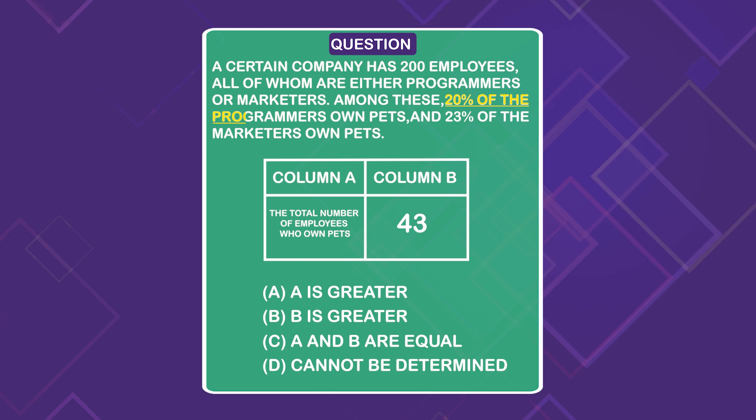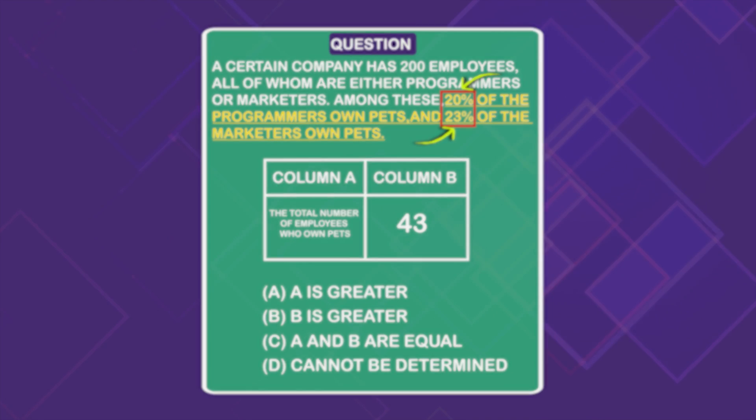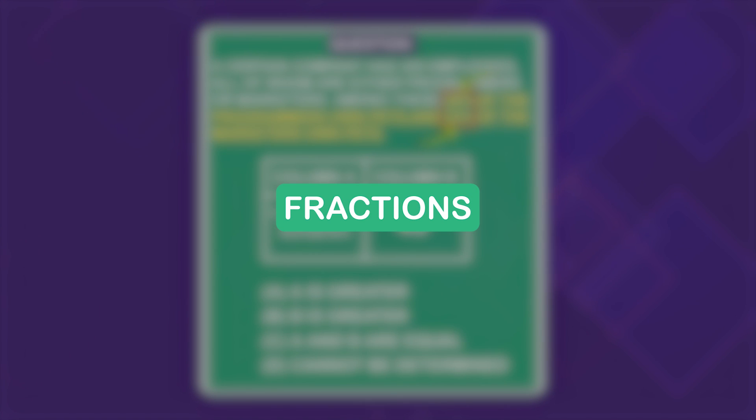We know that 20% of programmers own pets and 23% of marketers own pets. We can express both of these percentages as fractions to make our math a little easier.